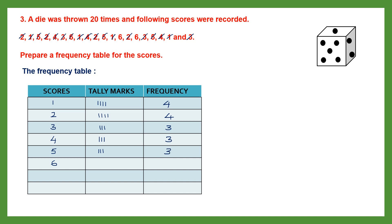For 6: it occurred 3 times — frequency is 3. Now we find the total frequency: 4+4+3+3+3+3 = 20. The total is 20, which matches the question — the die was thrown 20 times. This confirms we haven't missed anything.